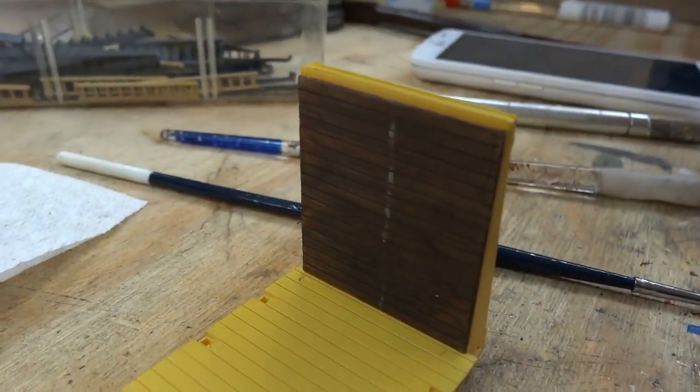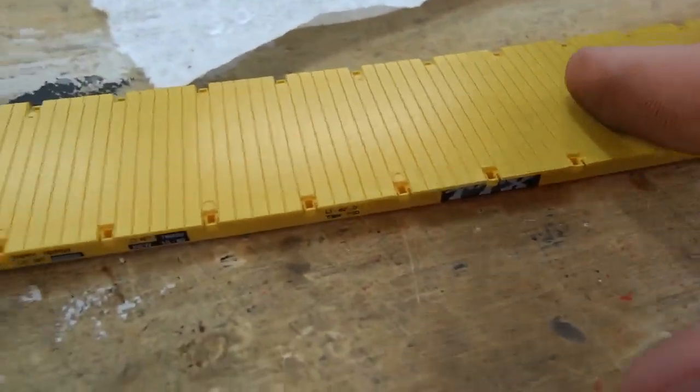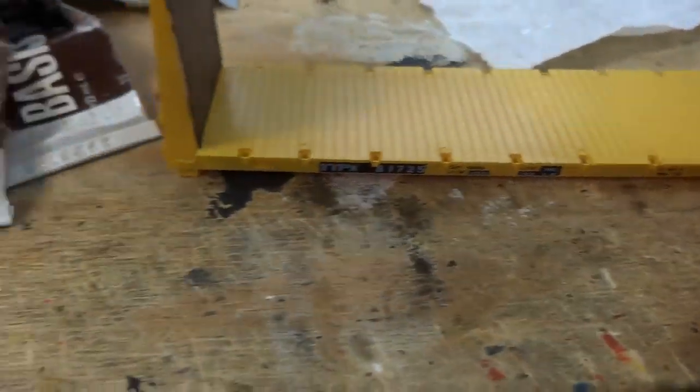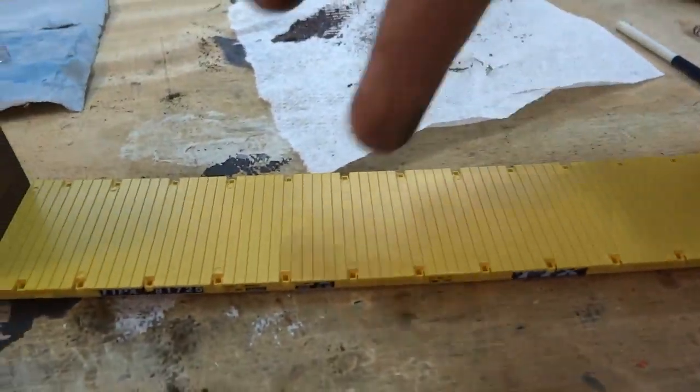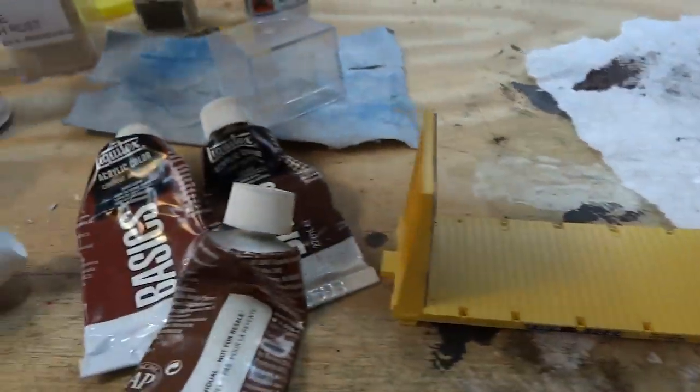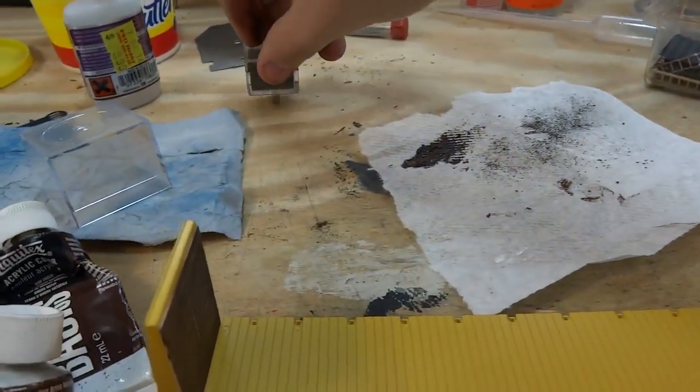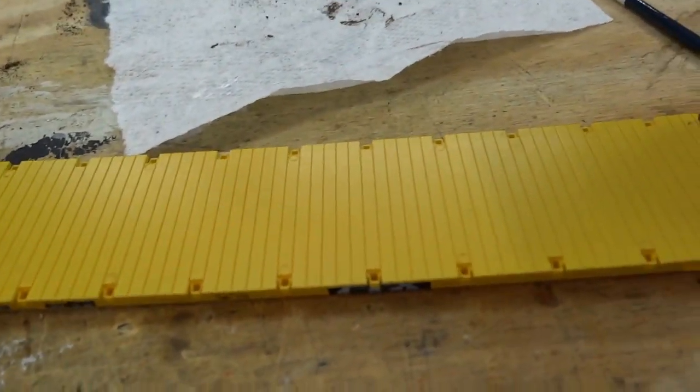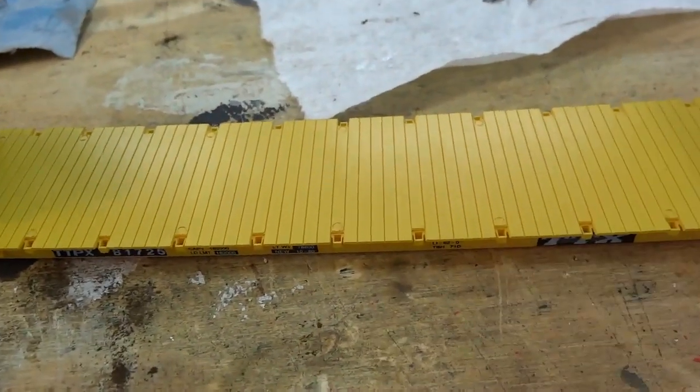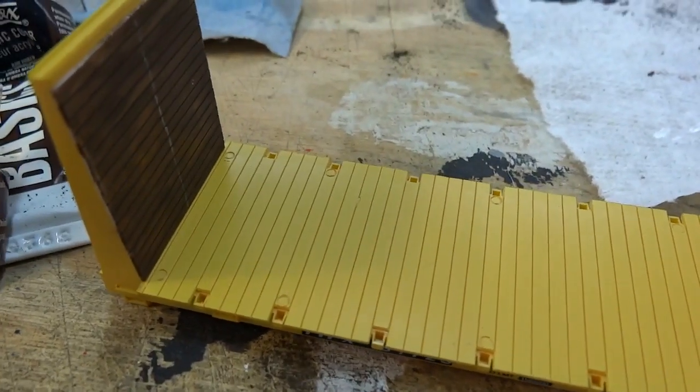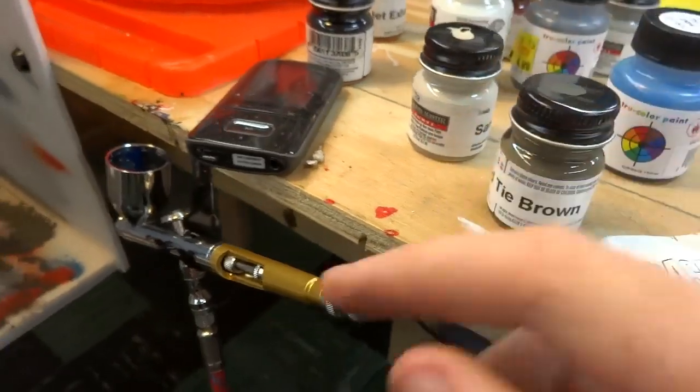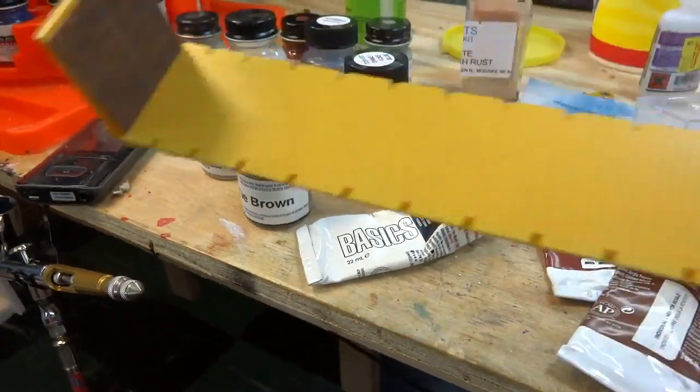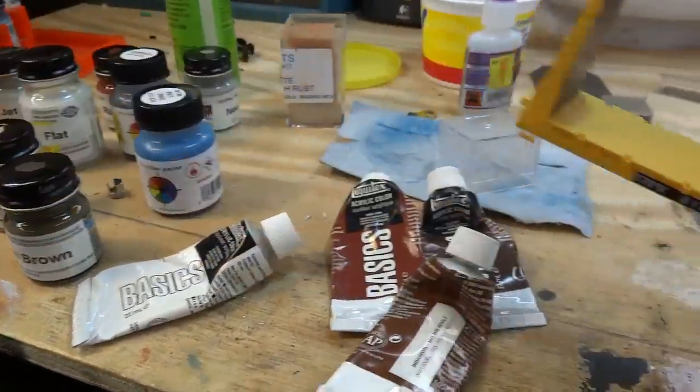All right, so we got the ends done on this thing. Now I'm going to worry about weathering this part. What I'm basically going to do is just take some more of that burnt umber paint that I have. Just very lightly dry brush it on there and follow up with some more of that earth brown. But it should help tone down this bright yellow deck somewhat. I've actually changed my mind and I'm actually going to use some of this Railroad Tie Brown and just airbrush it on. So we get a better, smoother effect on this as compared to dry brushing it.